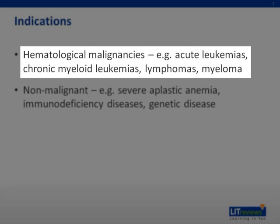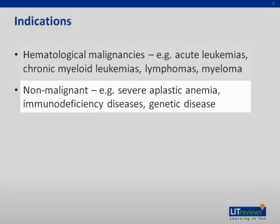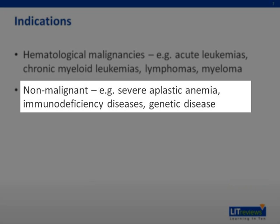An allogeneic transplant is usually done for hematological malignancies, which include acute leukemias, relapsed lymphomas, and sometimes refractory or relapsed myeloma. The common nonmalignant diseases for which allogeneic stem cell transplant is done are the bone marrow failure syndromes — for example, aplastic anemia.